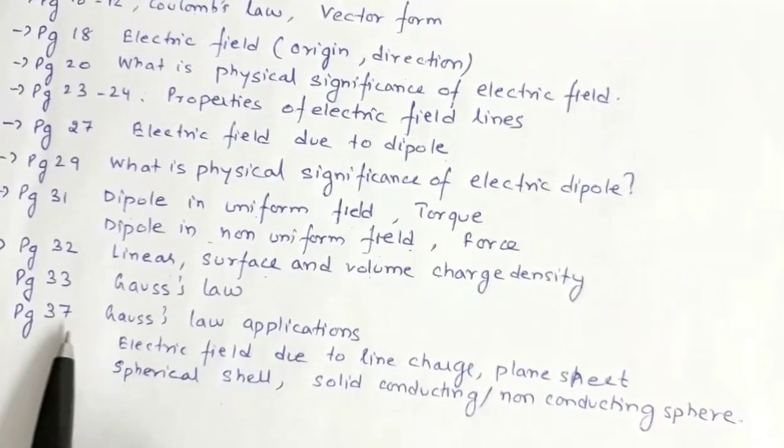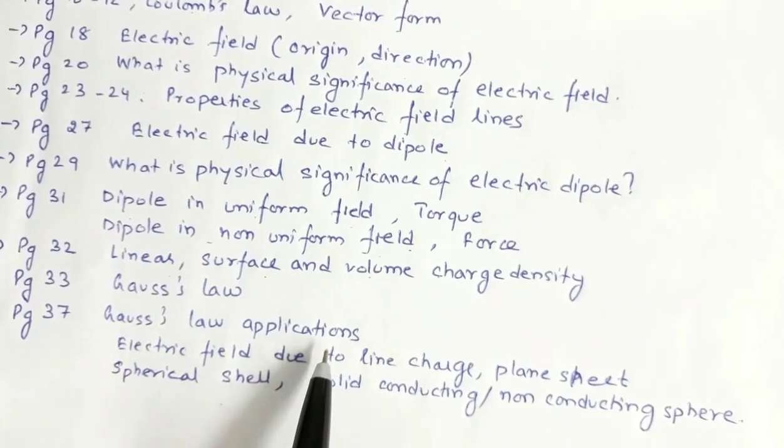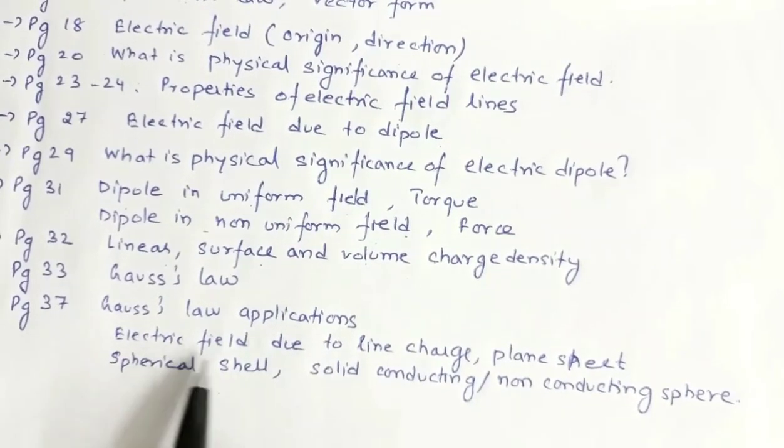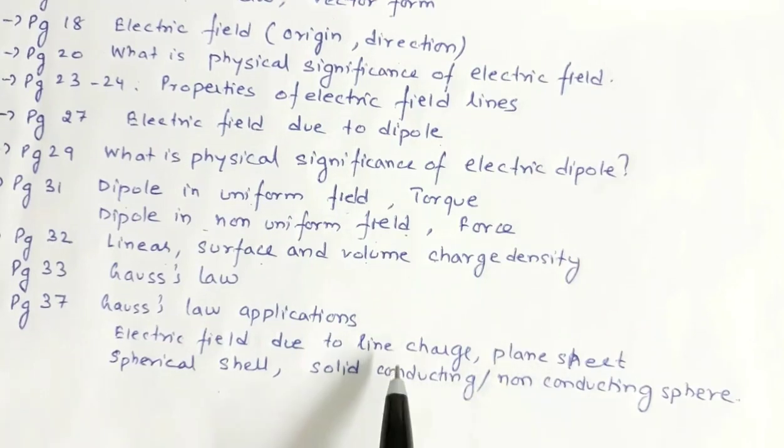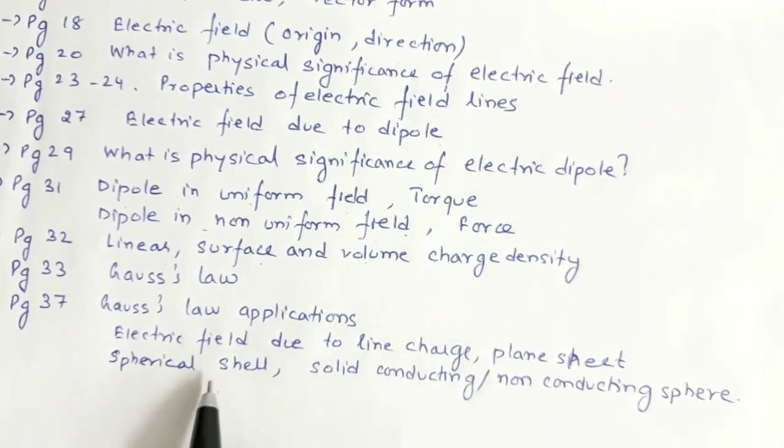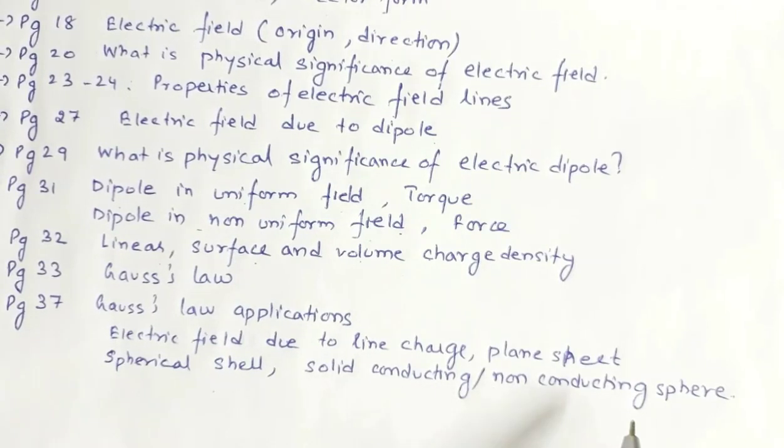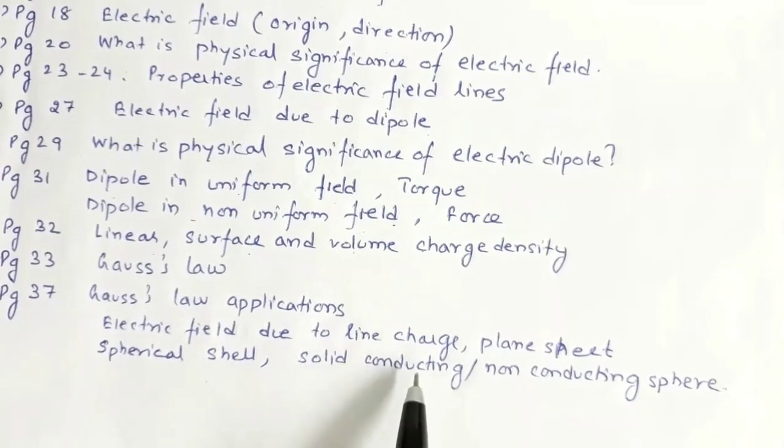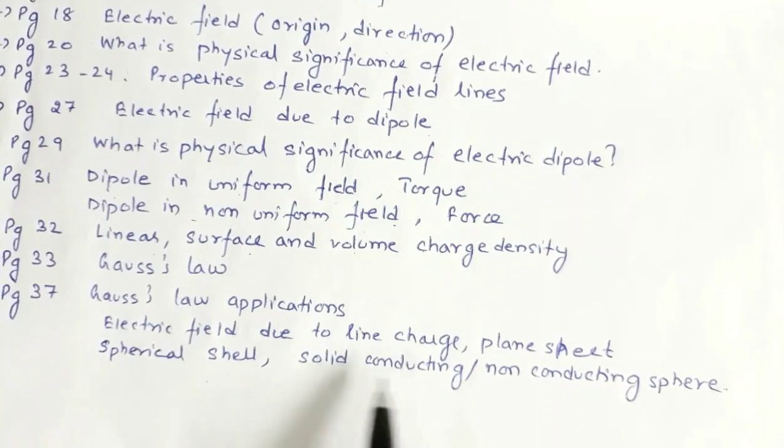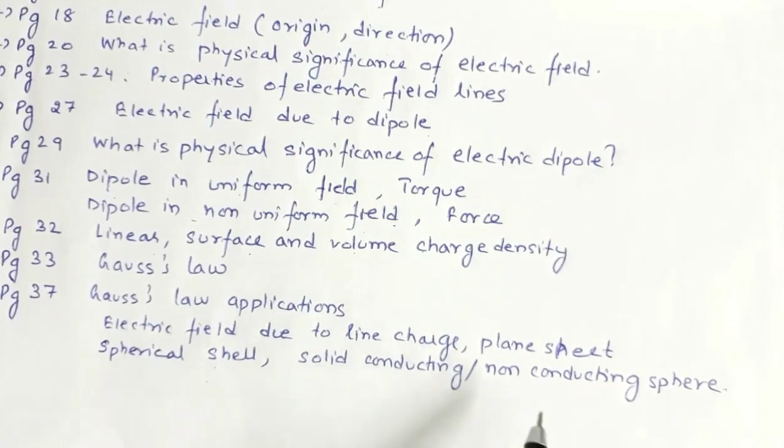Page 37. We have Gauss law applications. Electric field due to line charge, plane sheet, spherical shell, solid conducting sphere, non-conducting sphere. Conducting sphere has charges on the surface. Shell and conducting sphere. Non-conducting sphere has charge distributed throughout the volume. This is the electric field. We have graphs.